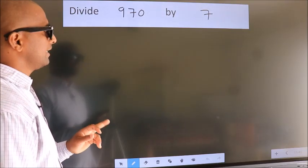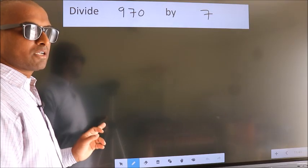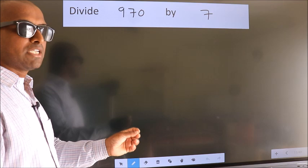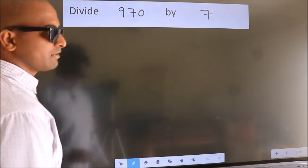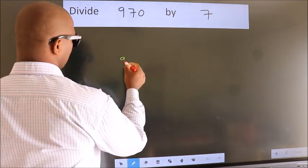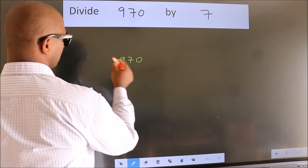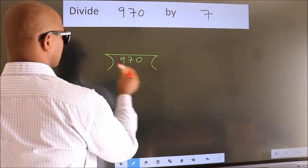Divide 970 by 7. To do this division, we should frame it in this way. 970 here, 7 here.